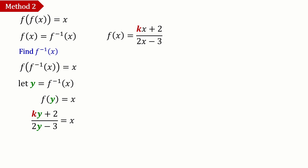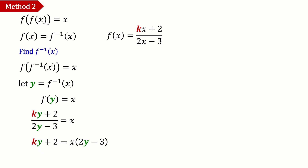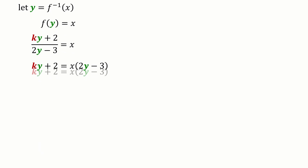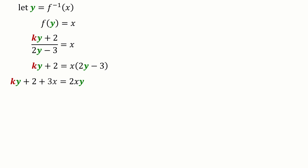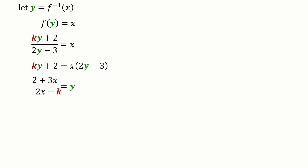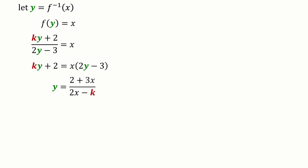We rearrange the equation so that y becomes the subject. Multiplying both sides by (2y − 3) gives 2xy − 3x on the right-hand side. Bringing the y terms together and factoring, we get y = (2 + 3x)/(2x − k). So f⁻¹(x) = (2 + 3x)/(2x − k).